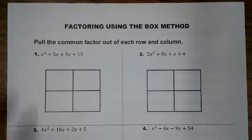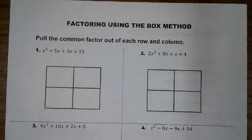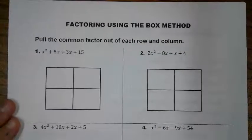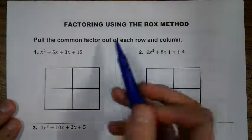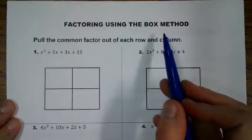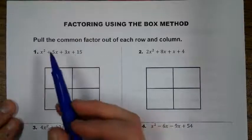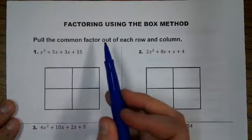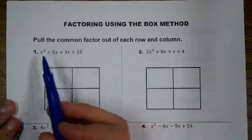All right guys, it's Mrs. Humaneck here and I'm going to talk to you guys about how we are going to be factoring. Last class you talked about how we factored using grouping, and so today we are going to talk about how to factor using the box method. We used the box method when we multiplied our binomials, and now we're going to factor. What we're going to do is pull the common factor out of each row and each column of the box.